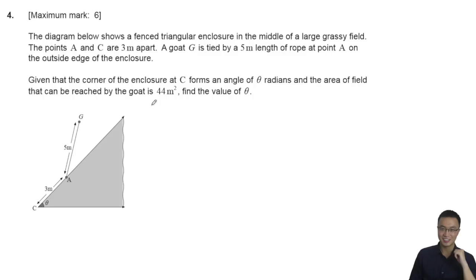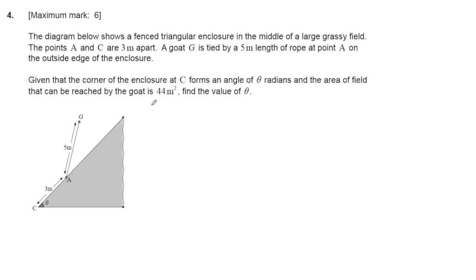The question is about geometry. The diagrams are below. Two friends trying a triangular enclosure, with points in the middle three meters apart. The goat G is tied by a five-meter band at point A on the outside edge of the enclosure. Given that the corner of the enclosure at C is angle φ radians, and the area the field can be touched by the chord is 44, find the value of angle φ.